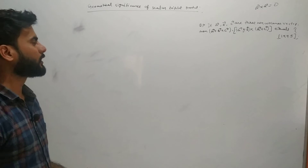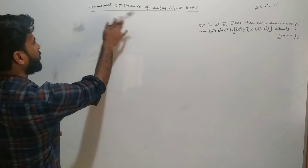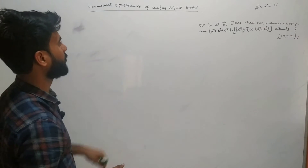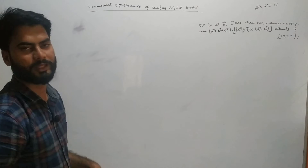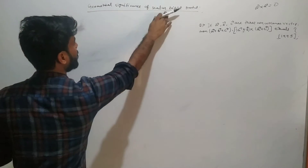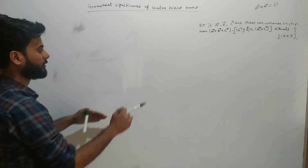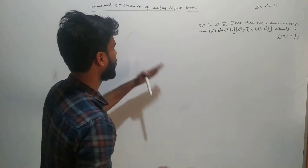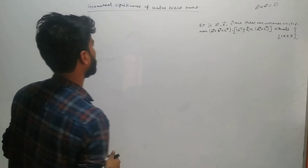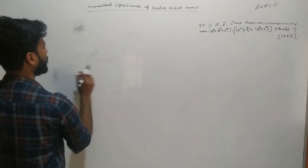Welcome back. In the last video we discussed about the scalar triple product, different types of properties of the scalar triple product, and we did some questions based on that. Here we will be discussing about the geometrical significance of the scalar triple product — that is, when calculated, what does the scalar triple product give? What is the geometrical significance? This we will discuss in this video.